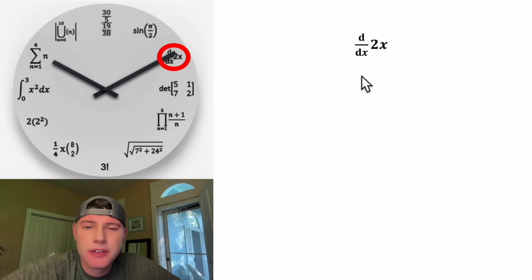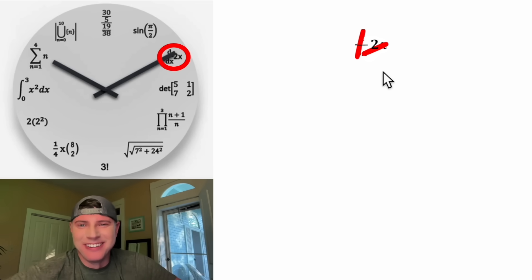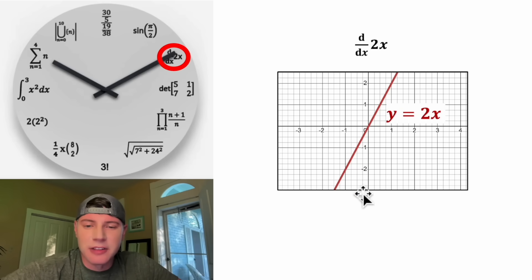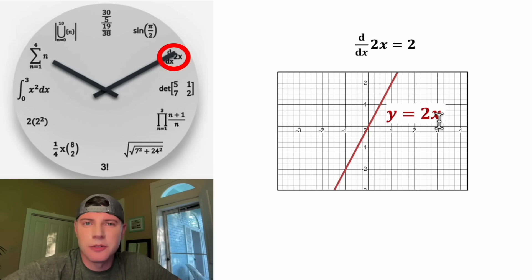This says d over dx of 2x. Now you might be tempted to just cancel the d's and cancel the x's, and then you'll have 2. But it doesn't really work that way — that's just a coincidence. What this is saying is find the derivative of 2x. If we graph the line y equals 2x, it wants to know the slope of this line. The rise over run, the slope, is equal to 2. So the derivative of 2x is equal to 2.